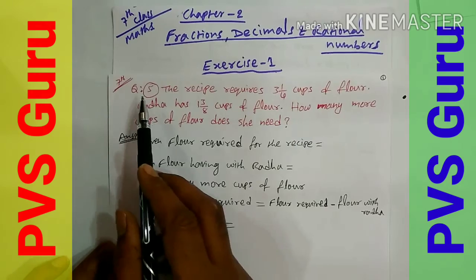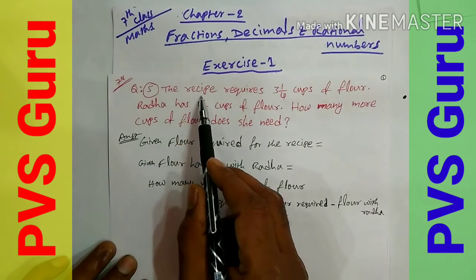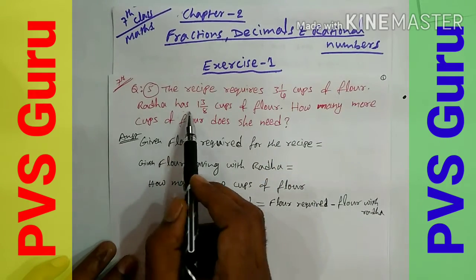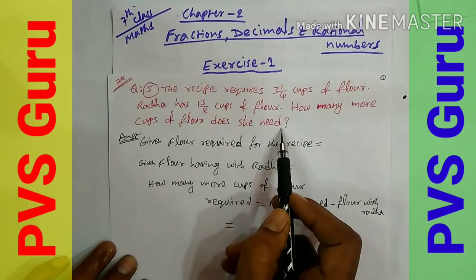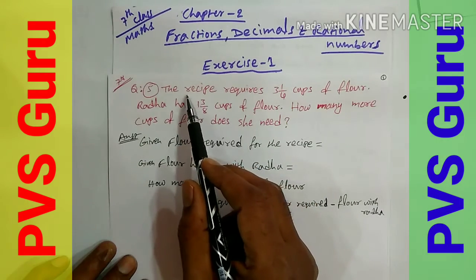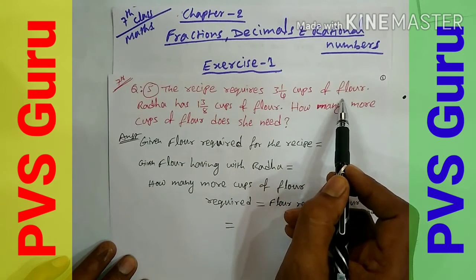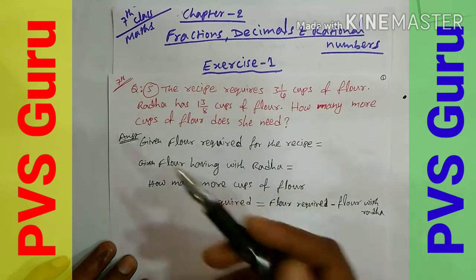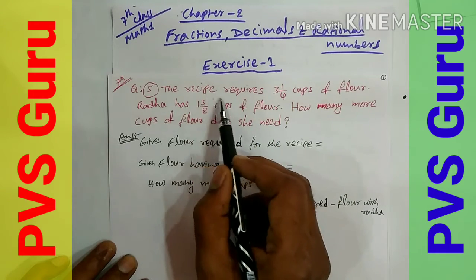Question number 5: A recipe requires 3 and 1/4 cups of flour. Radha has 1 and 3/8 cups of flour. How many more cups of flour does she need? To make the recipe, she needs 3 and 1/4 cups, but Radha has only 1 and 3/8 cups. So we need to find how much remaining flour is required.